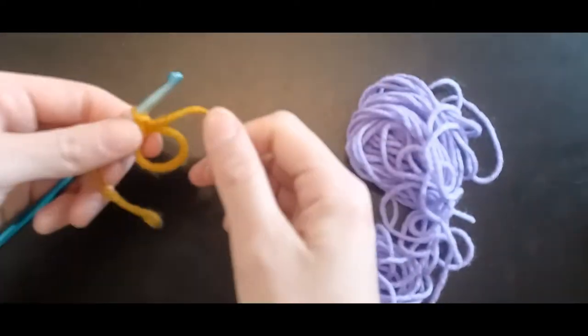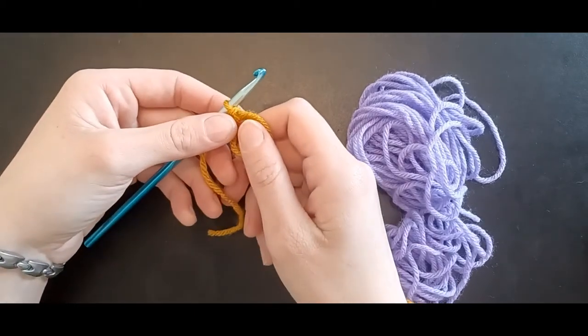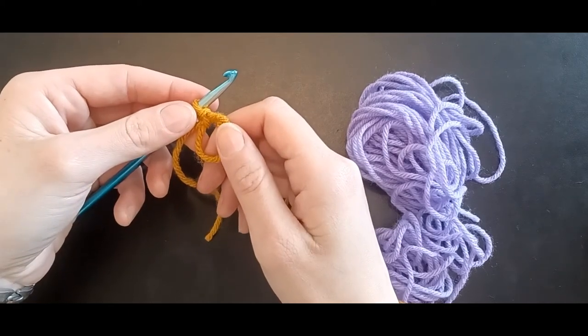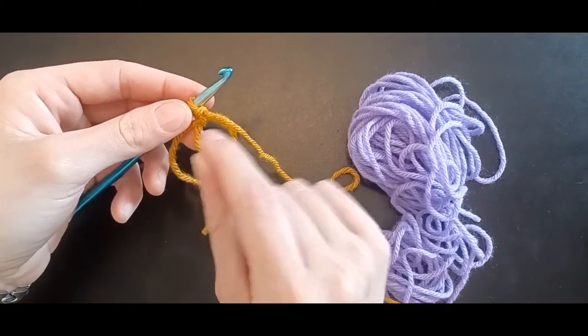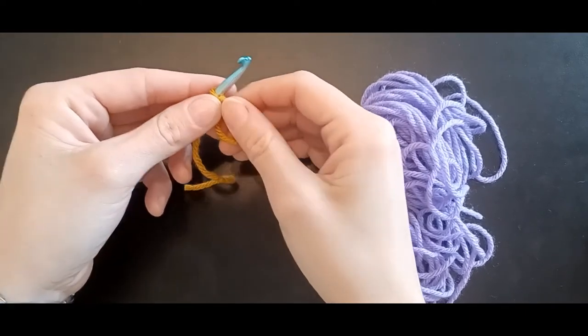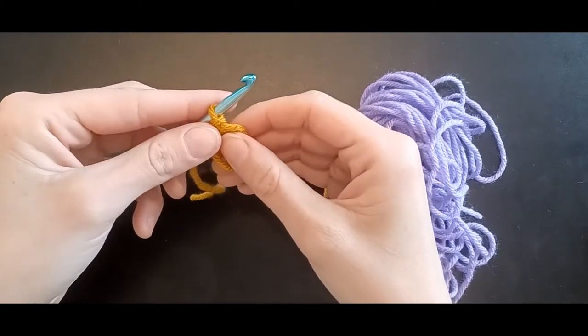Now if you struggle with the magic ring, which I did when I first started, you can chain four and slip together to form a little circle. It won't close quite as tight doing it that way, but that is an alternative to the magic ring.